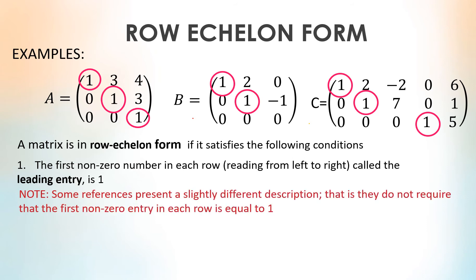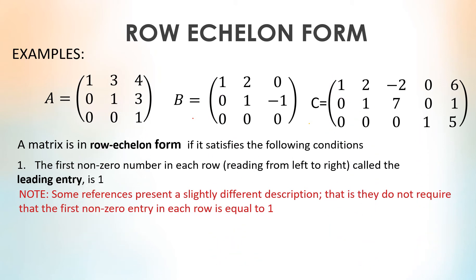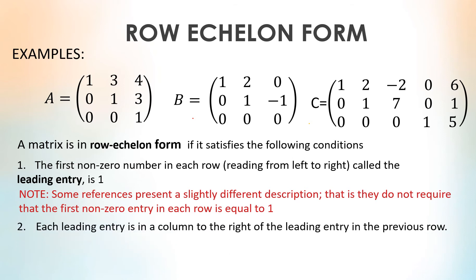However, there are some references that present a slightly different description — they do not require that the first non-zero entry in each row equals 1. Next, each leading entry is in a column to the right of the leading entry in the previous row. Observe the blue elbow line. The entries below the first one in each row must be 0. And lastly, the rows of all zeros are at the bottom of the matrix.